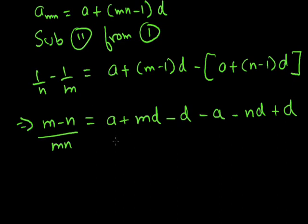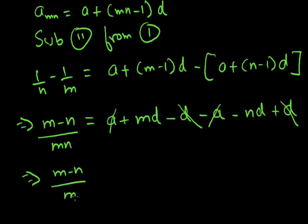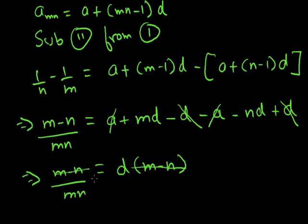In the resulting equation, the a terms cancel (opposite signs) and the standalone d terms cancel as well. The remaining terms give (m-n)/mn = d(m-n). Since (m-n) is a common factor, we cancel it from both sides, giving d = 1/mn. This is the value of the common difference.